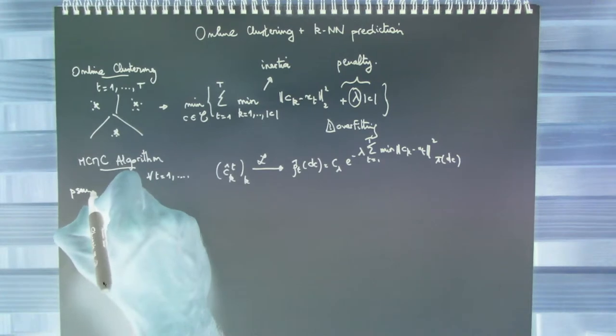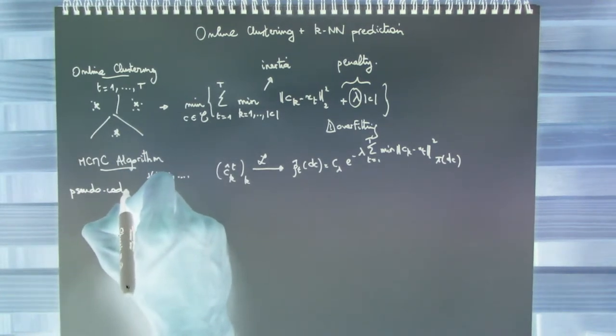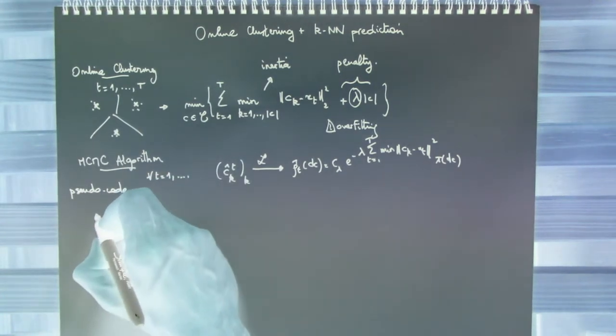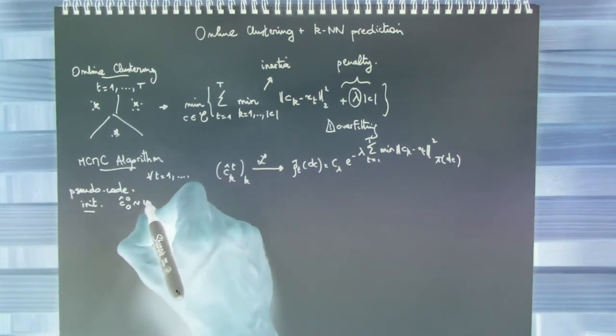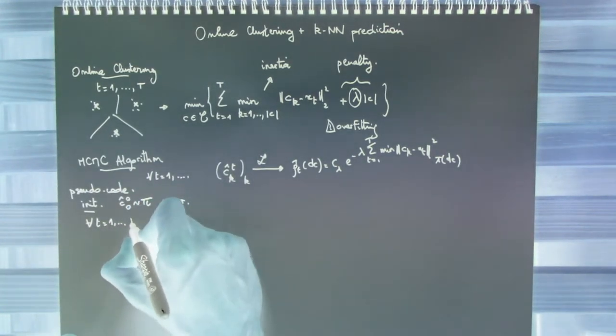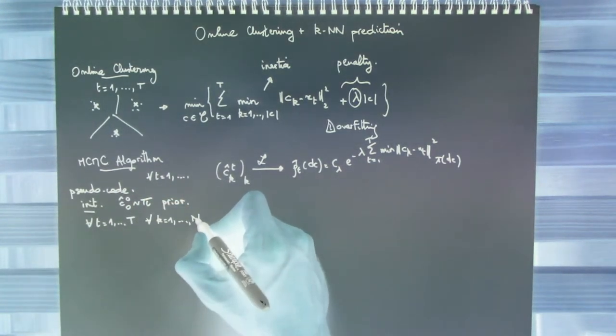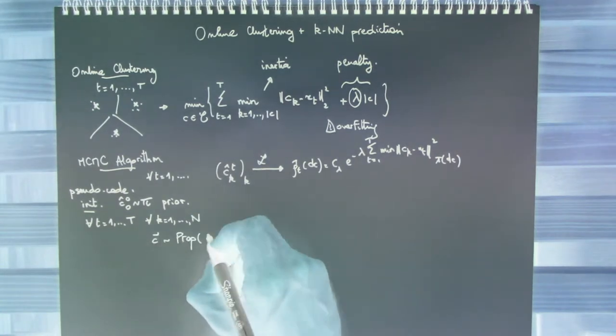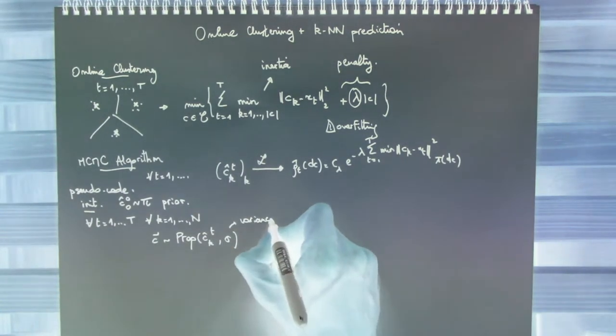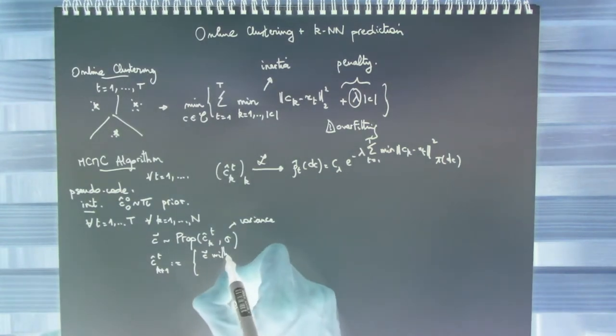The pseudocode is as follows. For any T, for any K from 1 to N, we propose a new state C tilde, and accept with probability Rho, based on the suitable likelihood ratio.